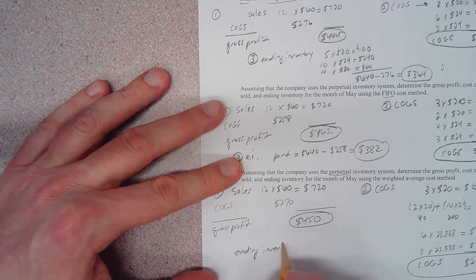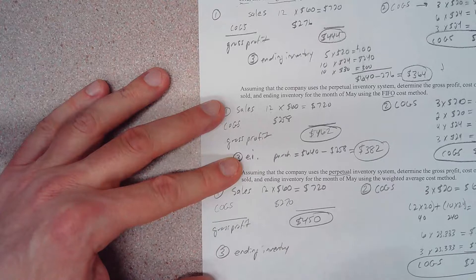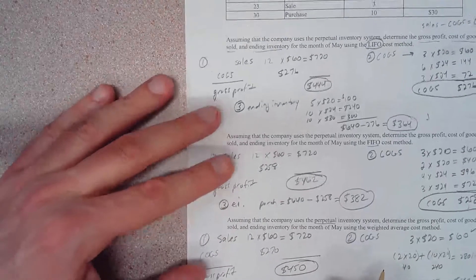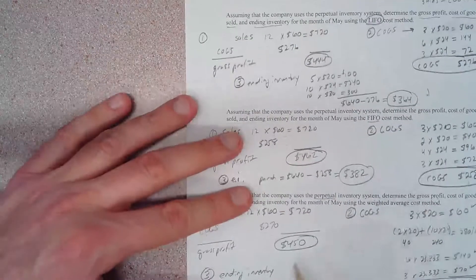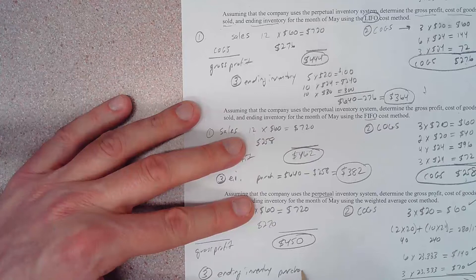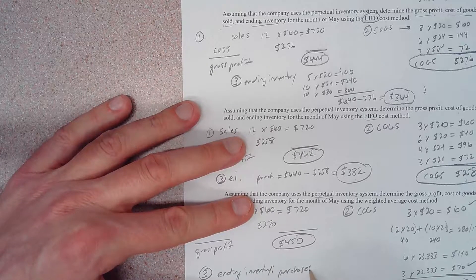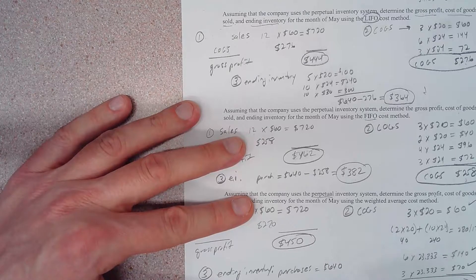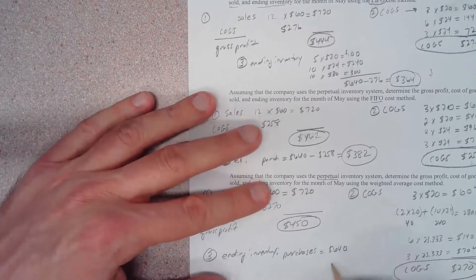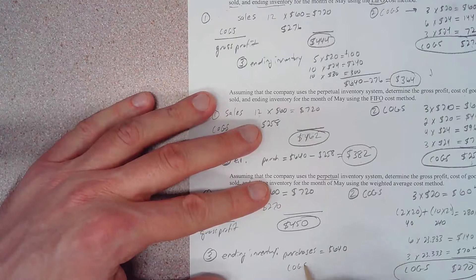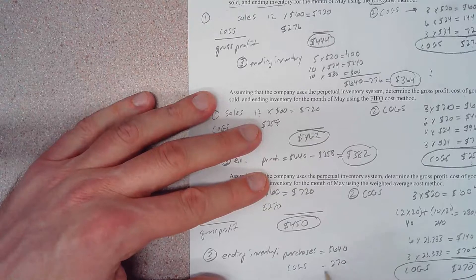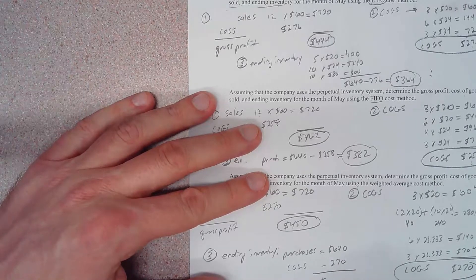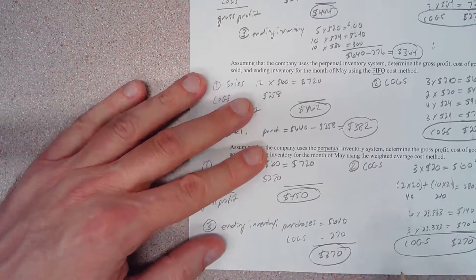Ending inventory is the last thing we have to calculate. We're going to do the same thing that we did before - we added up all of the purchases that we made. So purchases equal $640. We're going to subtract from that our cost of goods sold of $270. If we do that, we come up with ending inventory of $370.